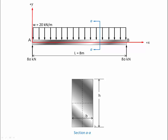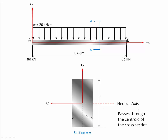In this rectangular shaped beam, the centroid will be right in the middle. We can plot the y-axis as pointing upward, and now we can see the positive z-axis. The origin of our coordinate system is at the centroid of the cross-section. We are going to define a plane that exists parallel to the z-axis, which also passes through the centroid of the cross-section. We are going to call this our neutral axis.